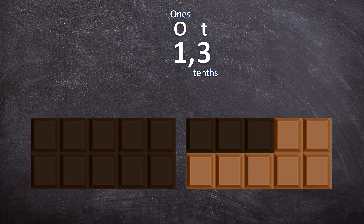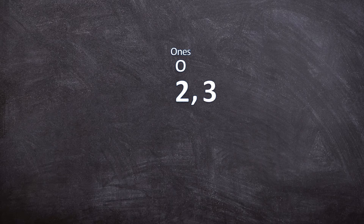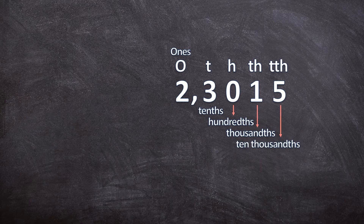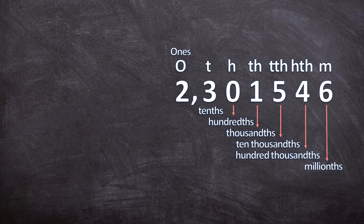Now let's look at all the place values of decimal numbers. Tenths are ten times smaller than ones, then hundredths, thousandths, ten thousandths, hundred thousandths, and millionths. Each decimal place value to the right is ten times smaller than the previous one. It's very important to notice that all the decimal place values end with -ths.